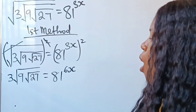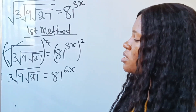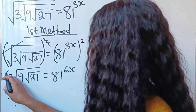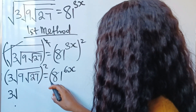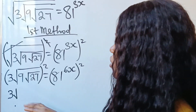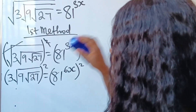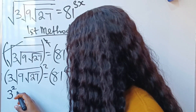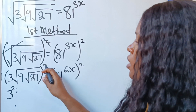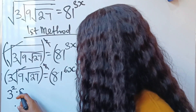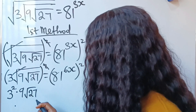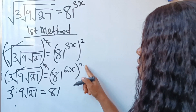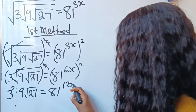We are still going to square again because we have more square root signs. So let's square again. If we do that, we have 3 squared — 3 squared multiplied by the whole expression squared — which removes the next root. So we have 9 times root of 27, is equal to 81 to the power of 6x times 2, which gives us 12x.